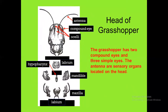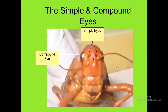Head of grasshoppers. The grasshopper has two compound eyes, one pair of antennae, and three simple eyes — so they have five eyes in total: two compound eyes and three simple eyes. The antennae are sensory organs located on the head. The mouth parts are the organs found in the surrounding area of the mouth. In the picture, this is the compound eyes and these three are simple eyes.